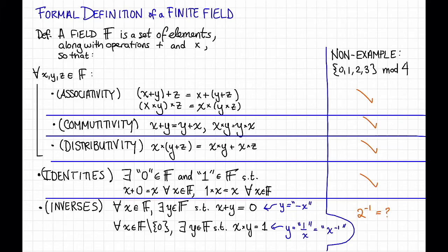We can check that 2 has no inverse just by multiplying it by all of the things. 2 times 0 is equal to 0 mod 4. 2 times 1 is equal to 2 mod 4. 2 times 2 is equal to 0 mod 4. And 2 times 3 is equal to 2 mod 4. In particular, there is nothing so that 2 times that thing is equal to 1 mod 4. So 2 does not have a multiplicative inverse. So this is not a field.